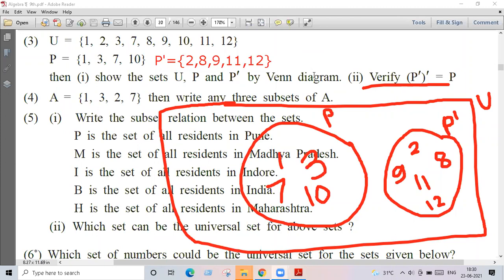Next, complement of complement of P. That means this is equal to U minus P prime. Then what do you get here? One comma three comma seven comma ten. Don't worry, it's easy guys.